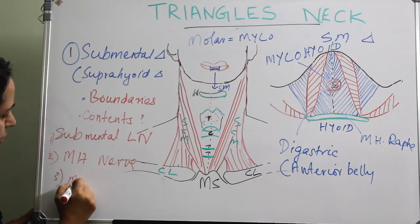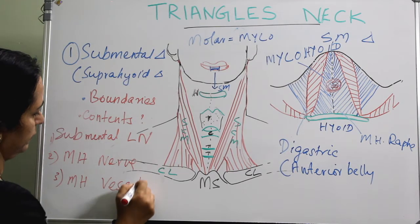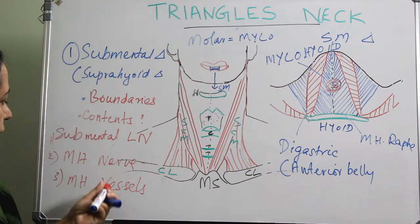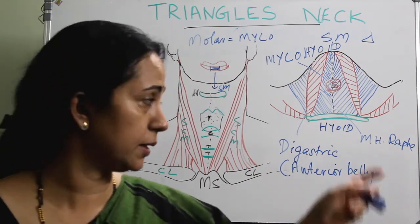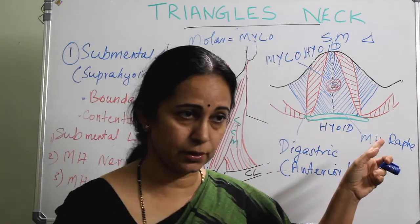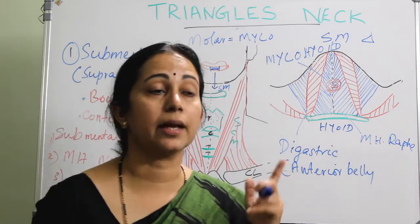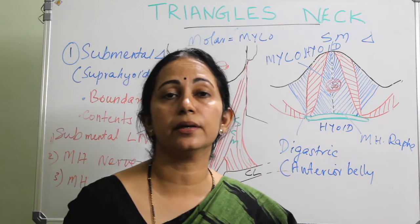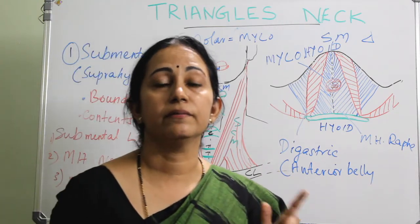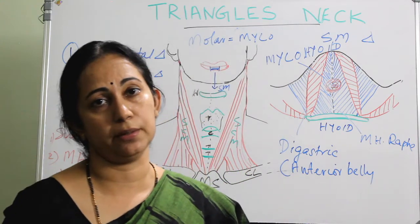It's very easy actually. The second content is the mylohyoid nerve, which supplies the mylohyoid muscle. The mylohyoid nerve is a branch of the inferior alveolar nerve, which in turn is a branch of the mandibular division of the trigeminal nerve.